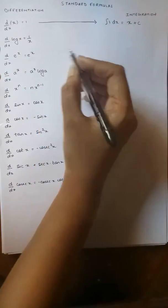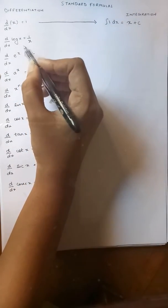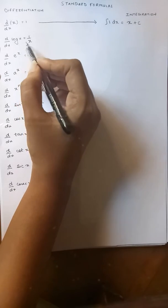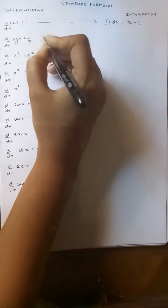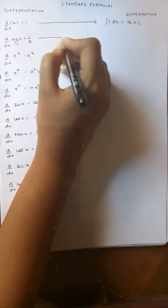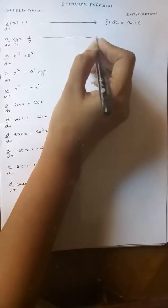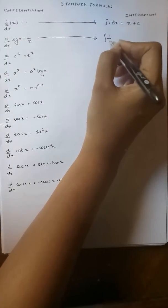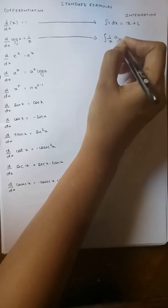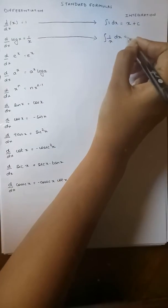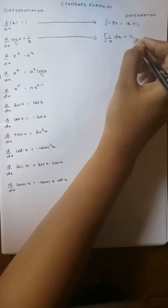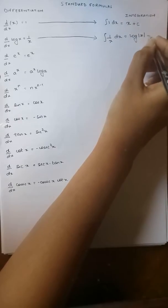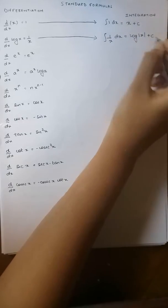Now let's go back to the next formula: differentiation of log x is equal to 1 upon x. So integration of 1 upon x with respect to x will give us log mod x plus c.